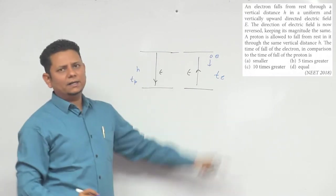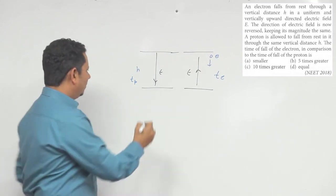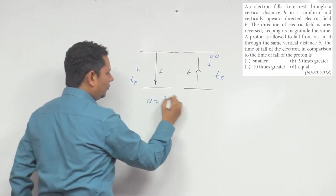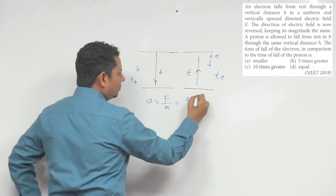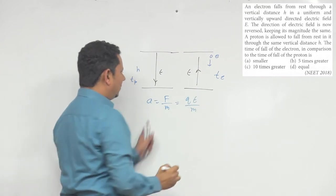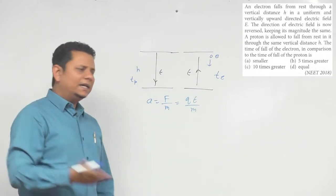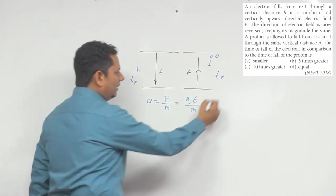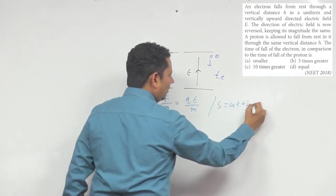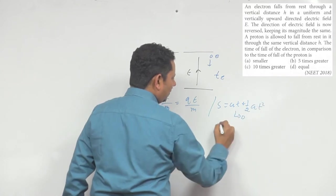हमें इन दोनों को compare करके बताना है। यहाँ पर acceleration को हम लिख सकते हैं force divided by mass, यानि QE divided by mass — यह आपका acceleration होएगा। अगर हम Newton की second equation यूज़ करें तो S = ut + ½at², और U आपका 0 है।